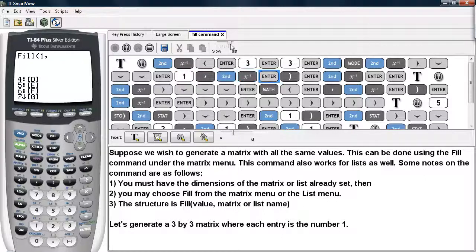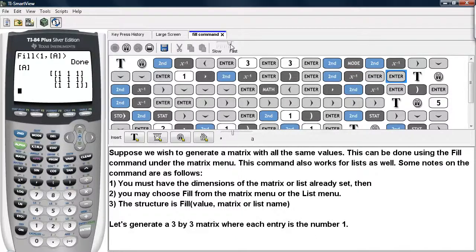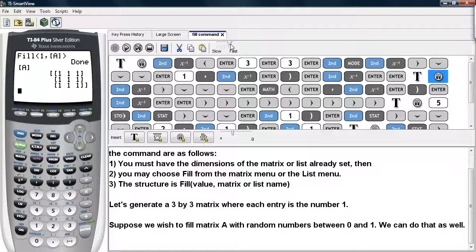Now, you have to choose the name of the matrix under names. You can't just type in square bracket A square bracket. So it says done, we'll go ahead and call up this matrix, and here you can see that we have a matrix of 1s.